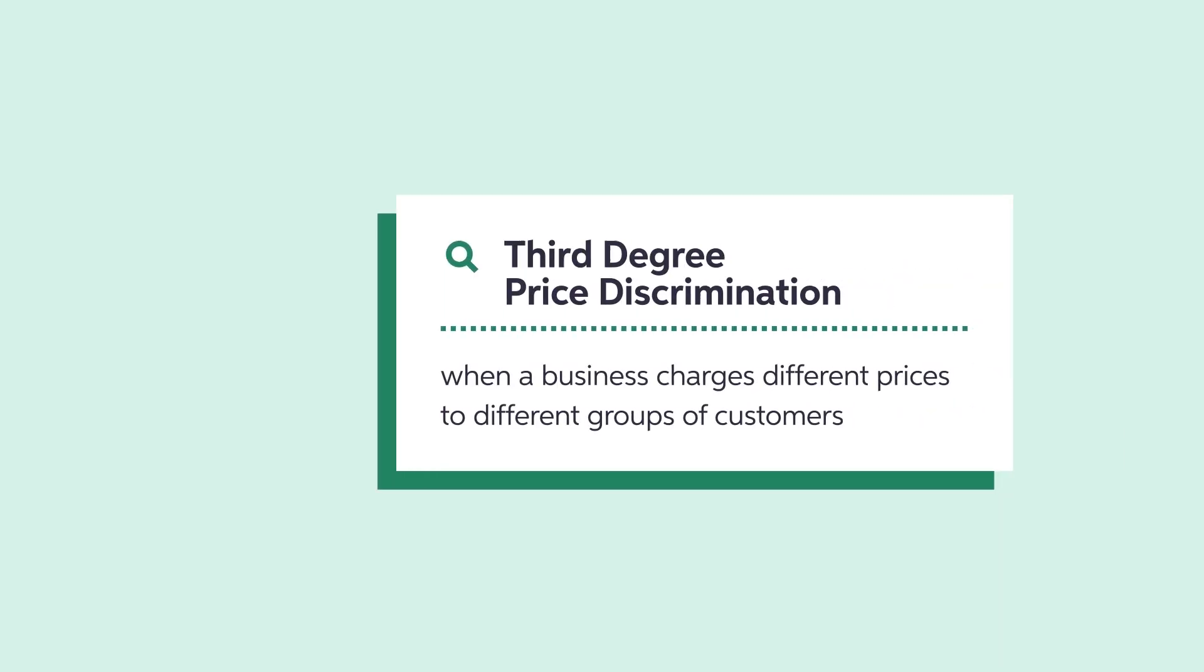Third-degree price discrimination charges different prices based on customer characteristics, such as demographic information or occupation. A local bookstore might offer 10% off to teachers and college students, for example. Museums offer discounts to senior citizens or students.